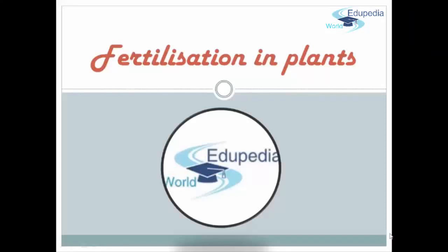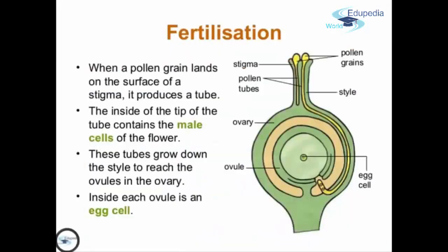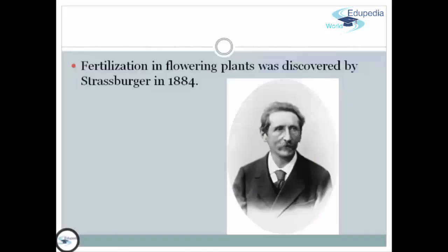Welcome to Etopedia World. Today we're going to discuss fertilization in plants. When a pollen grain lands on the surface of a stigma, it produces a tube. The tip of the tube contains the male cells of the flower. These tubes grow down the style to reach the ovules in the ovary. Inside each ovule is an egg cell. Fertilization in flowering plants was discovered by Strasburger in 1884.